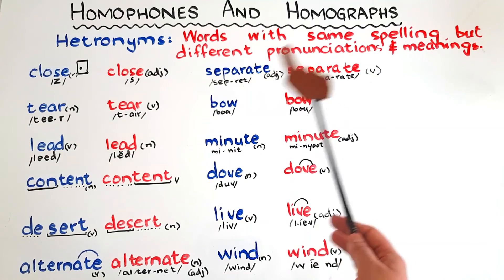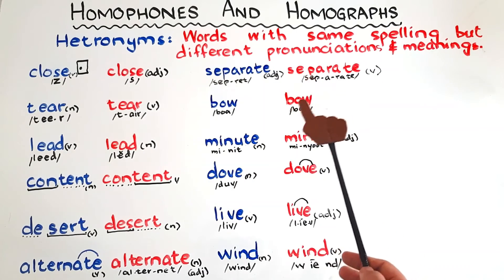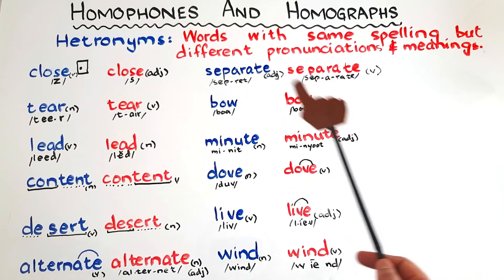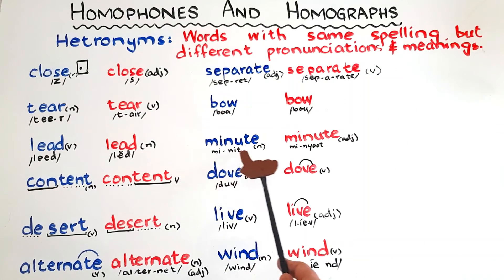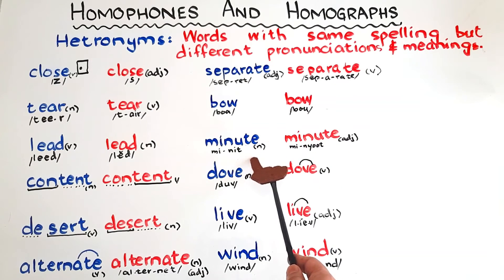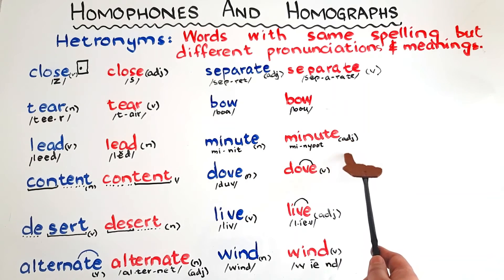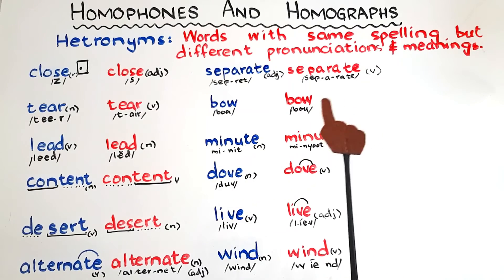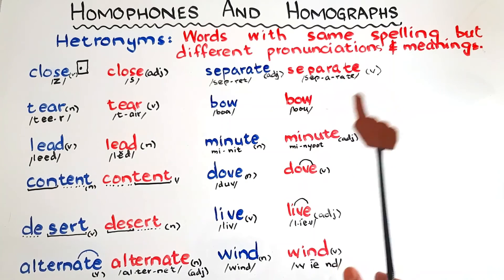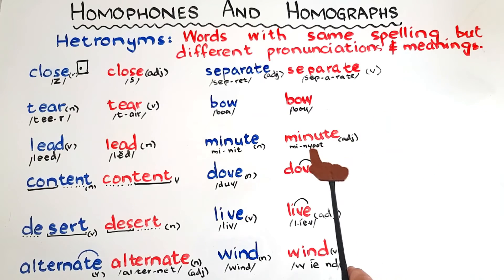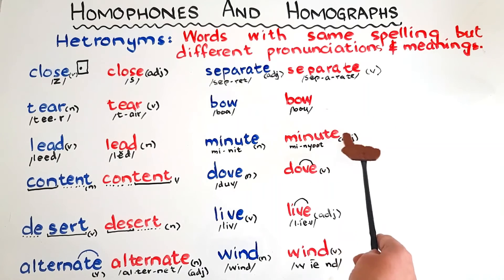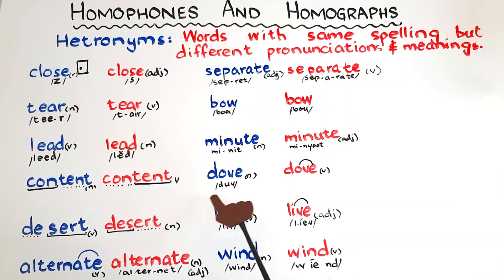The next word is 'minute' — a noun, simply the 60th part of an hour; in an hour we have 60 minutes — and 'minute', an adjective meaning the smallest, as in 'I just made some minute changes'. Then we have 'dove' — a noun, the name of a bird — and 'dove', the past tense of dive, as in 'he dove into the pool'.